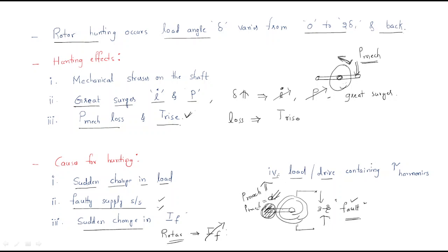Fourth cause: load or drive containing torque harmonics. Torque is the main reason for synchronous motor rotation, so if the load torque or drive torque contains harmonics, hunting will develop. In summary, the causes are: sudden change in load, faulty supply voltage, sudden change in field current, and load/drive containing harmonic torque.